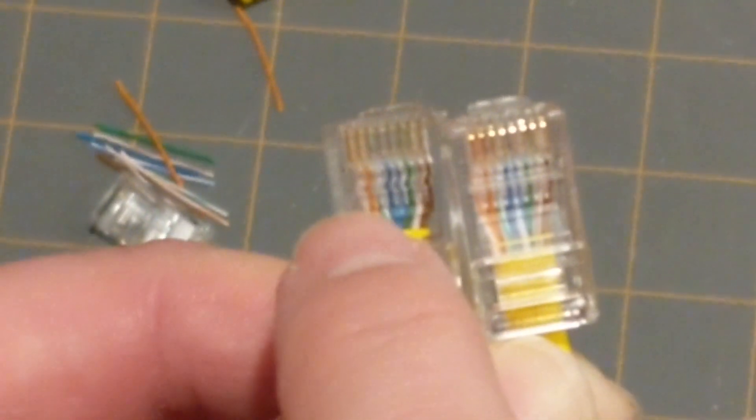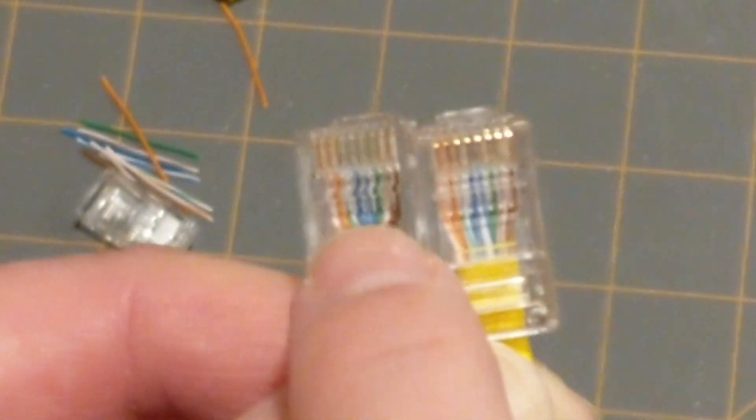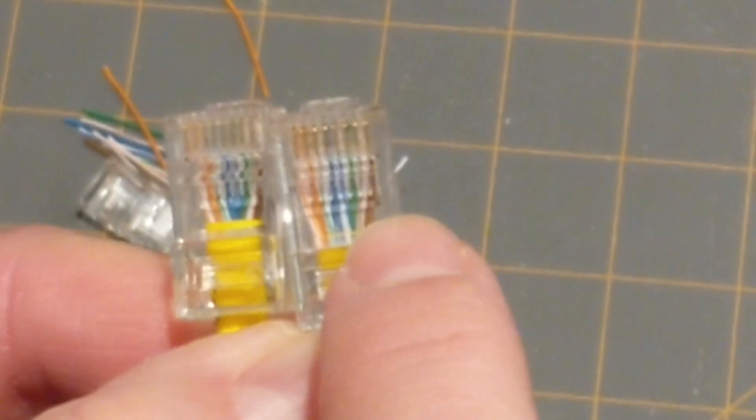White, orange, orange. White, green, blue. White, blue, green. White, brown, brown. And it's the same pattern over here, assuming you did everything right.